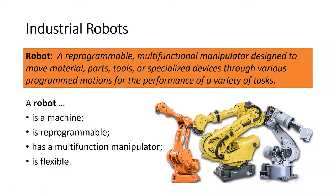So what is a robot? A robot is a reprogrammable multifunctional manipulator designed to move material, parts, tools, or specialized devices through various programmed motions for the performance of a variety of tasks. It's reprogrammable — meaning we can program it over and over again. It's not a single-purpose device that can only do one thing; we can reprogram it for different functions and applications.